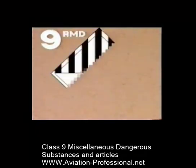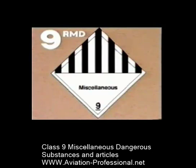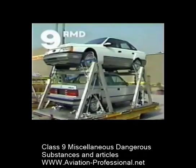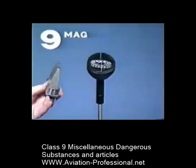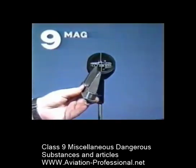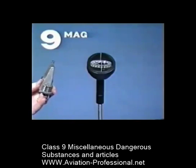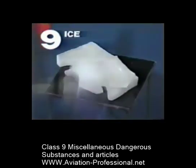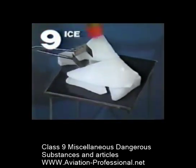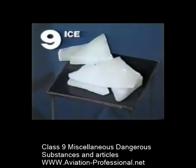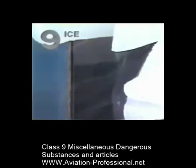All those dangerous goods with properties which have not already been discussed belong to class 9. For example, vehicles, magnetic substances, and dry ice. Dry ice is very cold — minus 70 degrees Celsius.